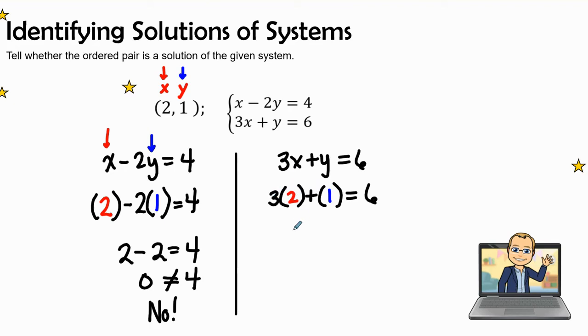So we can see when we multiply 3 times 2 is 6, 6 + 1 equals 6. I don't think so, because 6 + 1 is 7. And 7 does not equal 6.